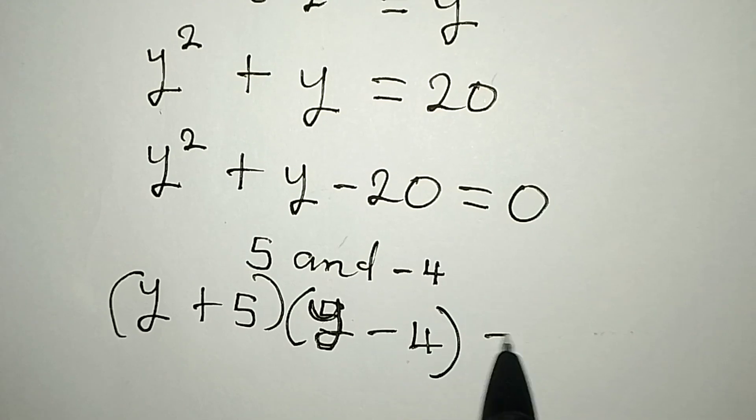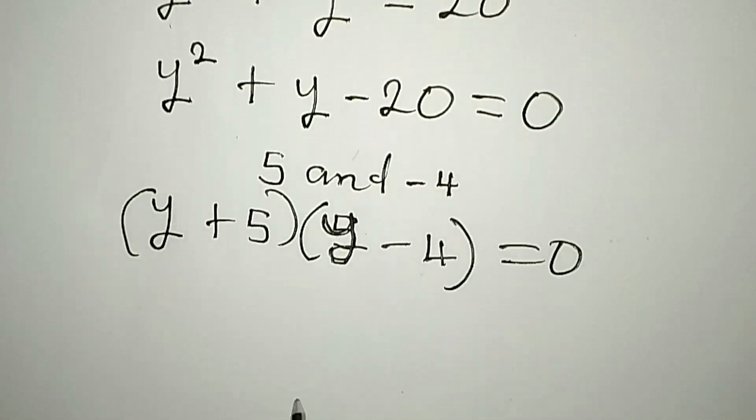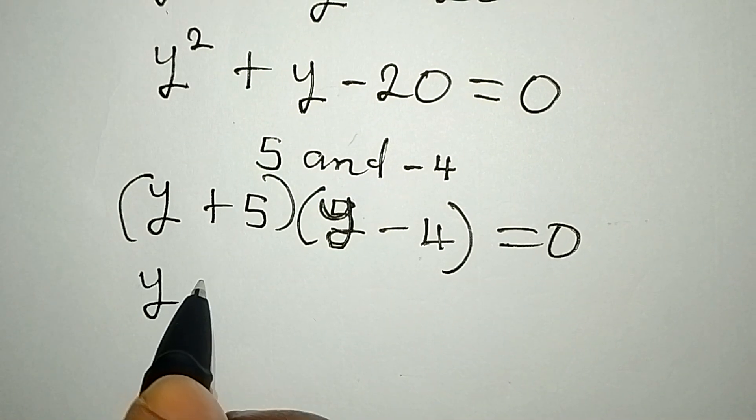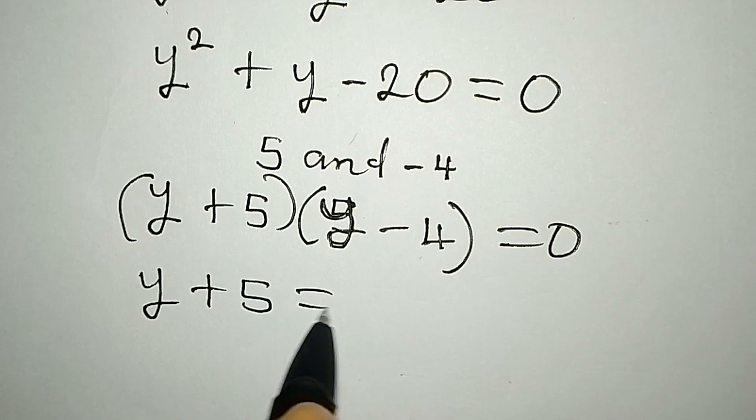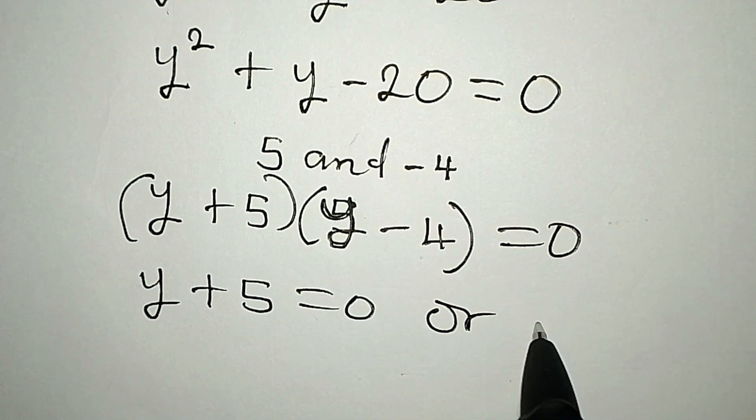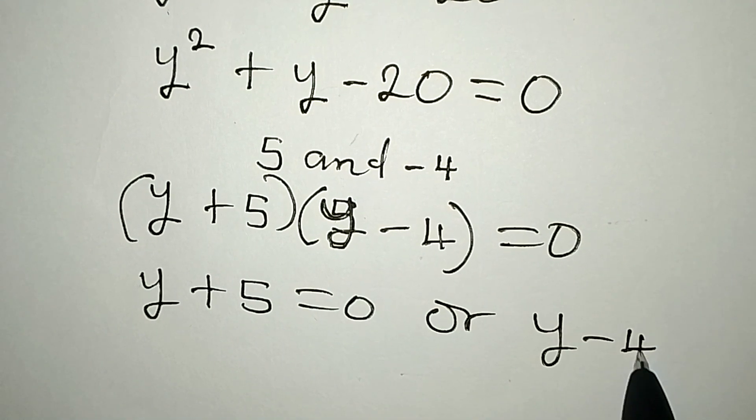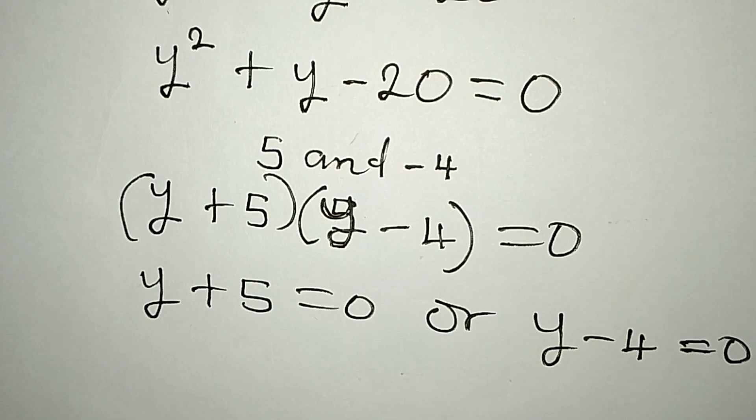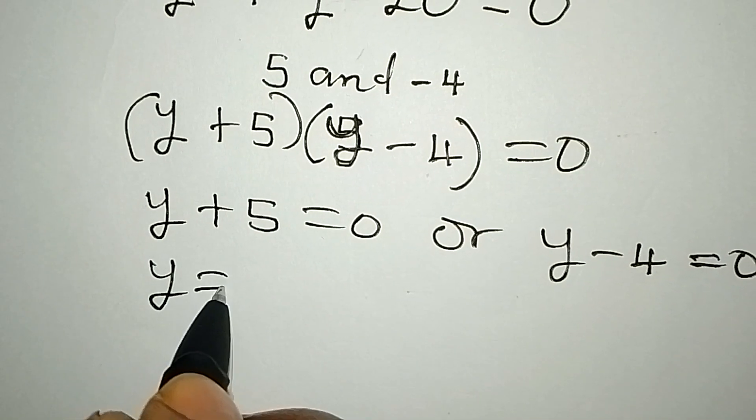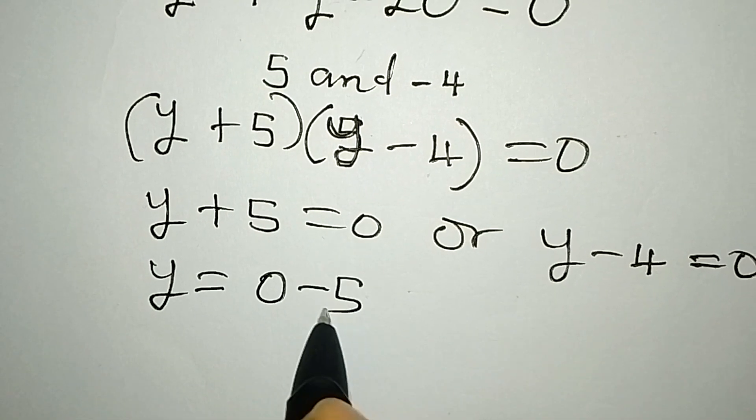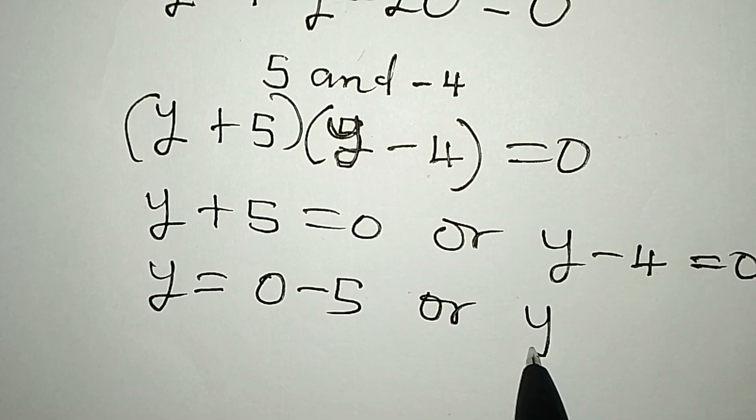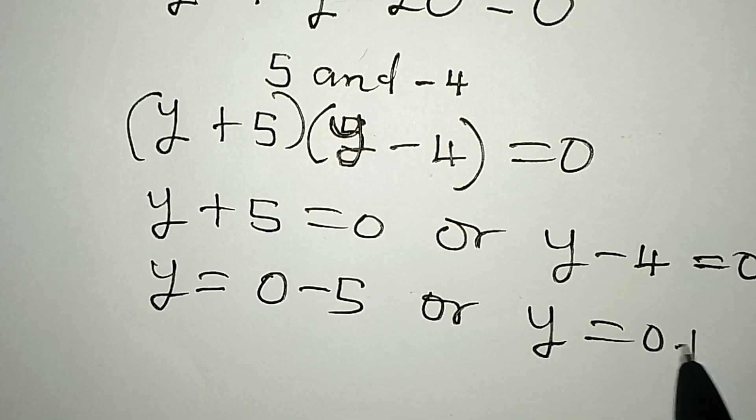And this is equal to 0. So we have y plus 5 to be equal to 0, or y minus 4 to be equal to 0. Y from here is 0 minus 5, or y is equal to 0 plus 4.